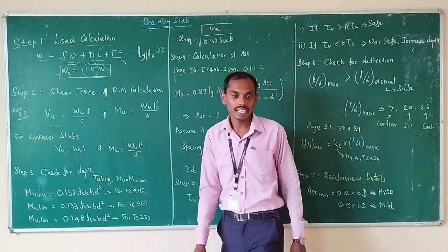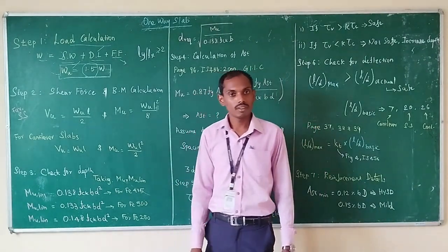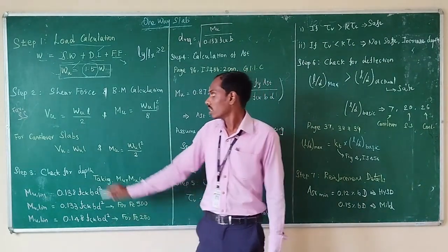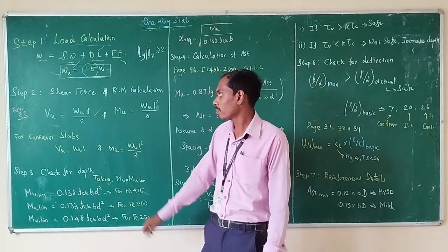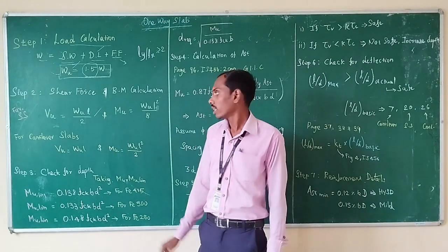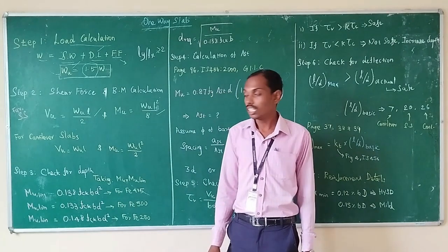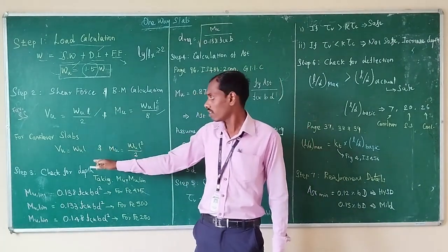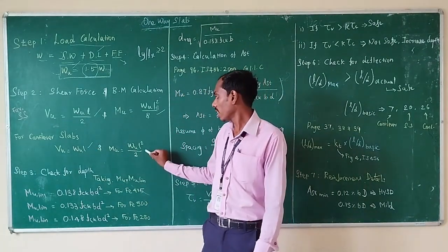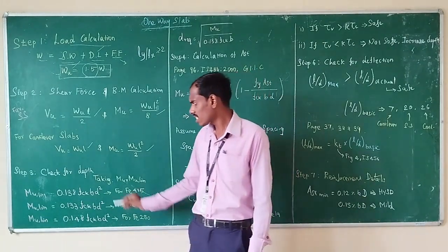In the second step, we calculate the shear force and bending moment. For a simply supported slab, the ultimate shear VU = WU×L / 2, and the ultimate bending moment = WU×L² / 8. For a cantilever slab, the shear value is WU × L, and the ultimate bending moment = WU×L² / 2.